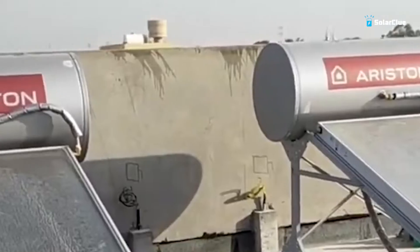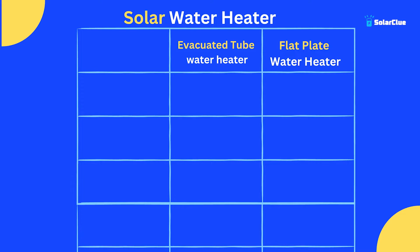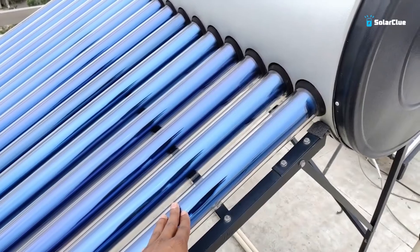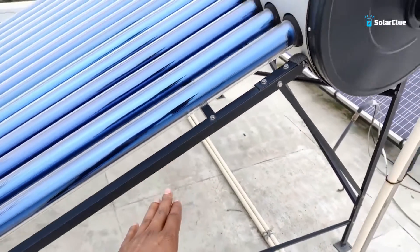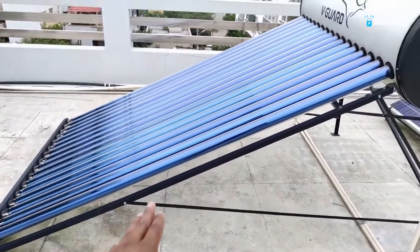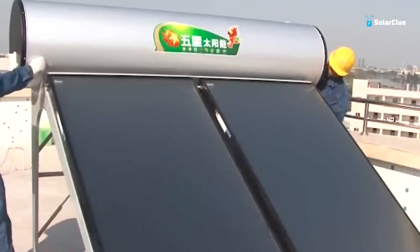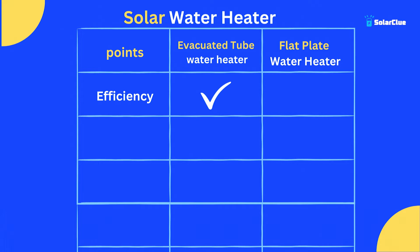After selecting non-pressurized or pressurized, you also need to choose between a tubular type model and a panel type model. First point — efficiency: the tubular model is better. It gives 3 to 5 degrees more temperature and heats 15 to 20 minutes faster compared to a panel model. The tubular model can also produce some hot water even in cloudy conditions, whereas a panel model will fail to do so.